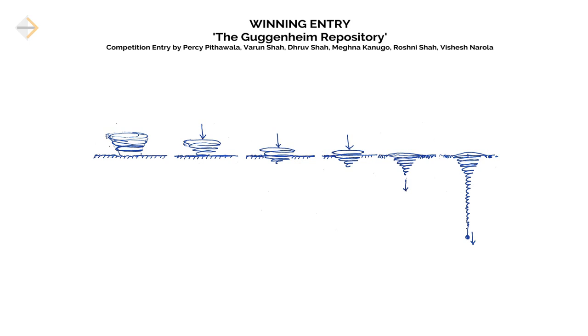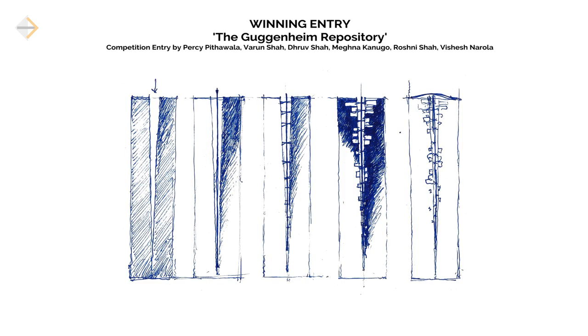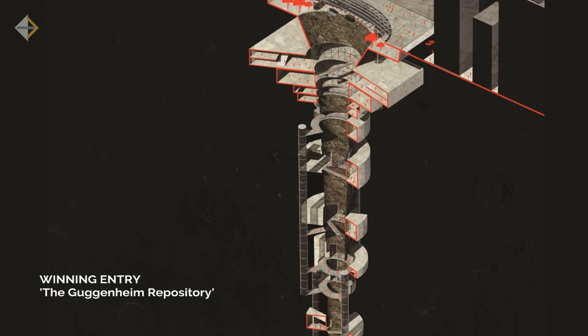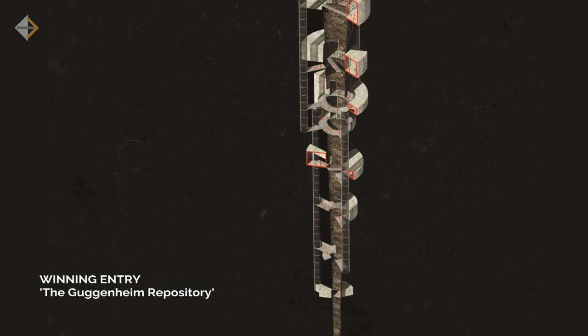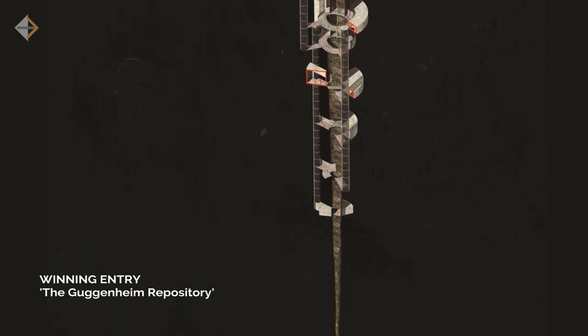Noteworthy among the competitions is the Guggenheim Reimagined competition, for which we won the top prize. It was about reimagining how the Guggenheim would have been built by Frank Lloyd Wright had he been alive today, on the same site where his iconic building currently exists. Taking clues from the spiral, we evolved our concept and went down almost 300 meters deep into the ground. We call it the Guggenheim Repository — it's all about saving priceless works of art for the future.